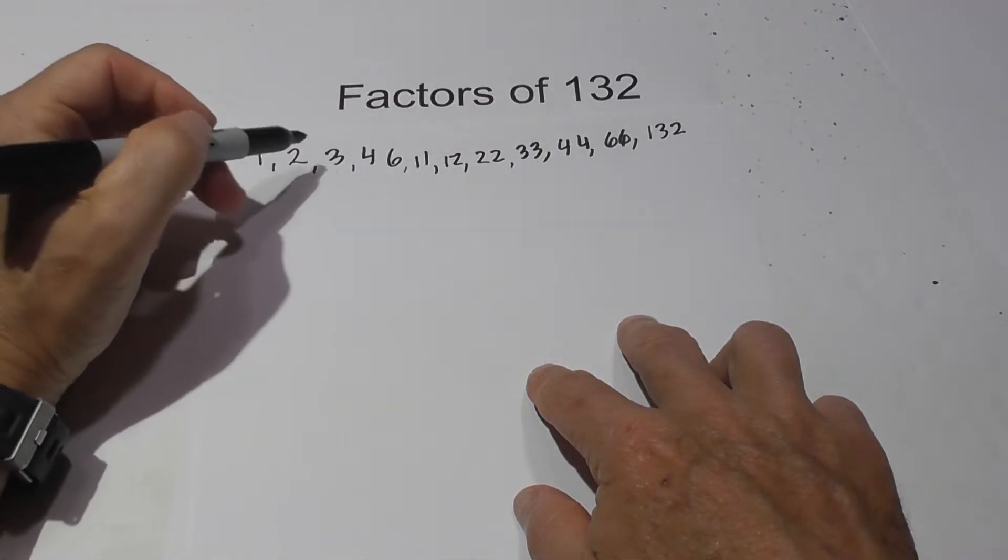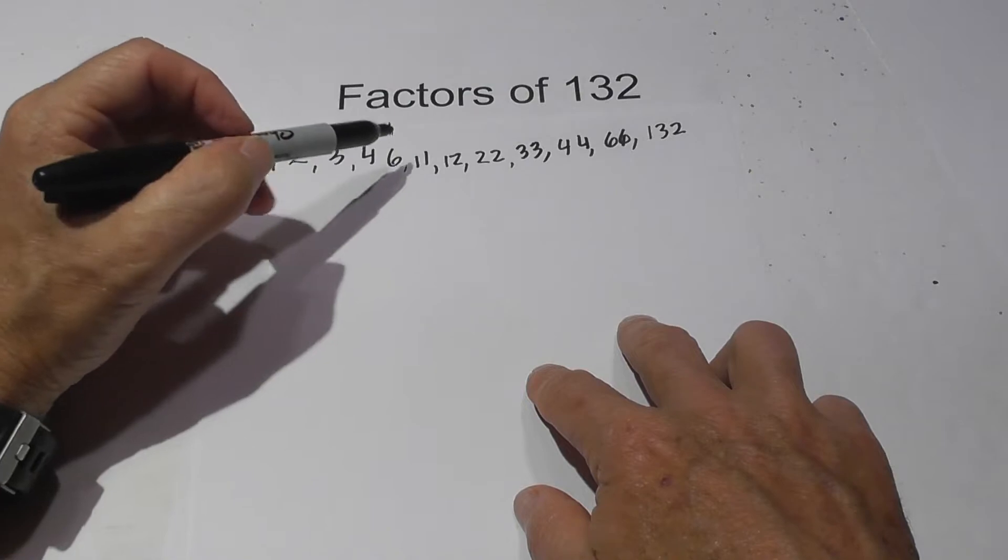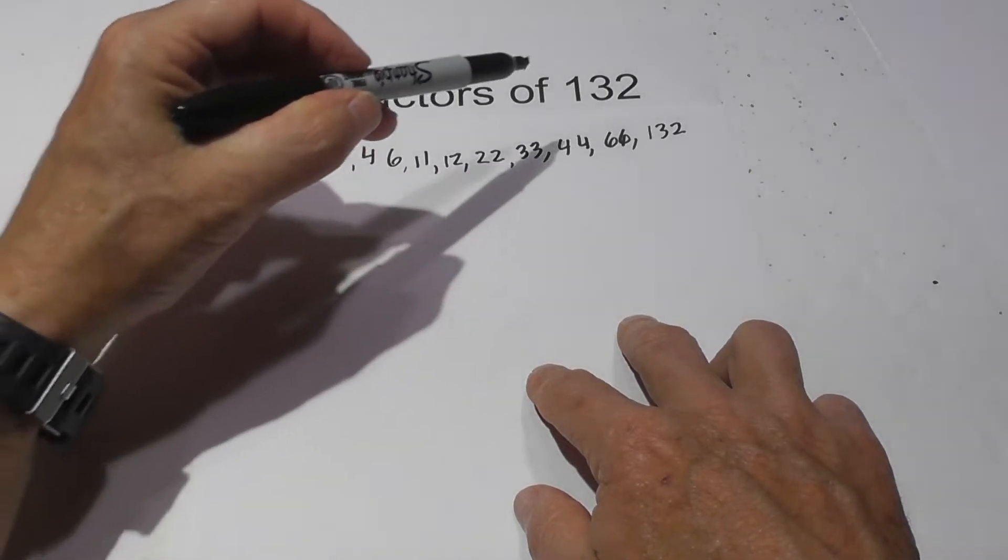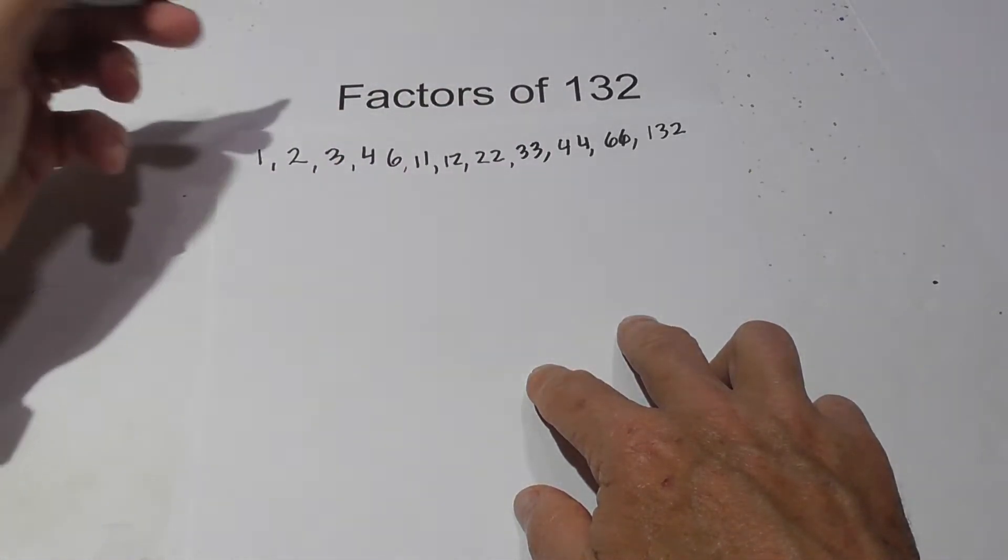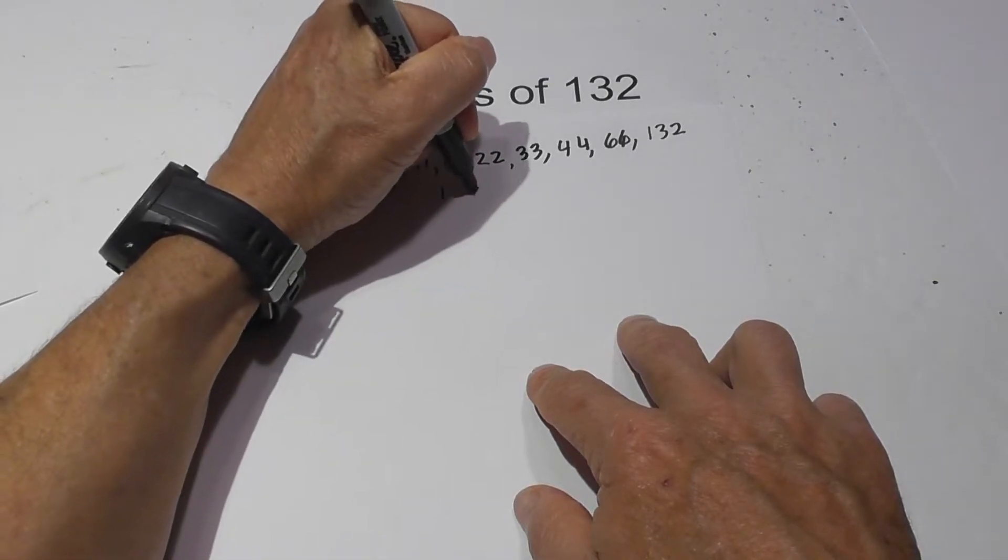So the factors are 1, 2, 3, 4, 6, 11, 12, 22, 33, 44, 66, 132. And if you would like to see these in pairs...